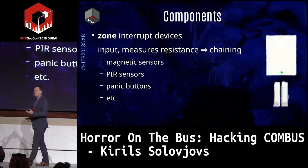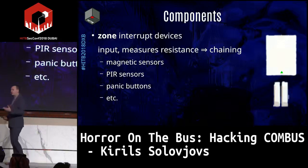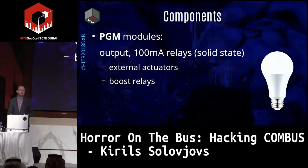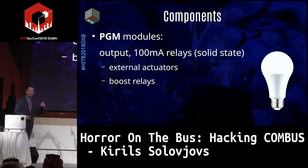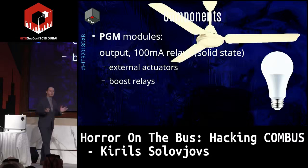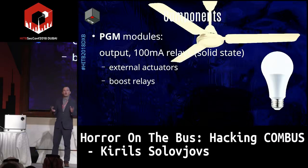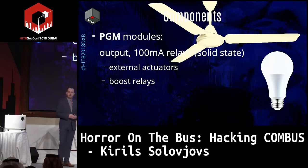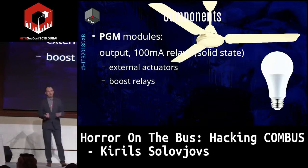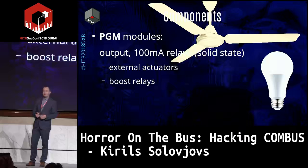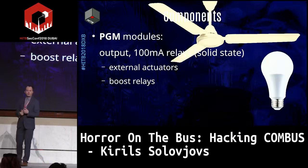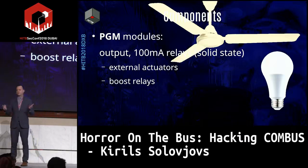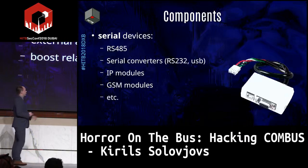Every alarm system has to have sensors — zone interrupt devices in Paradox — which are just input devices with two wires: ground and zone wire. It measures resistance, which allows for chaining multiple sensors on one line. Examples include magnetic sensors, passive infrared sensors, and panic buttons. It's one way — you only get input from the device. PGM modules work the other way: output, allowing you to configure the alarm system on specific conditions, like movement in area one but not area two, to switch on a PGM output. It can drive a device up to 100 milliamps, and with a relay you can drive a light bulb or something more powerful.